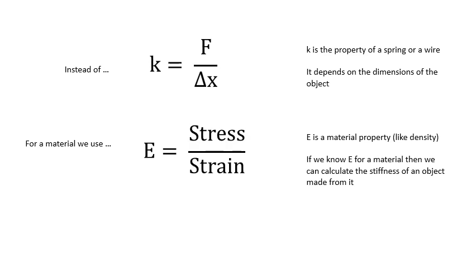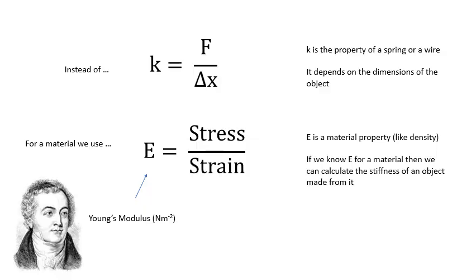If I know the value of E for steel, then I can work out the stiffness of a steel wire or cable or whatever. E is called the Young's modulus, named after a very clever man called Thomas Young. Because strain has no units, Young's modulus is measured in newtons per metre squared, or Pascal — the same units as stress. The Young's modulus of a material tells us the stiffness of a material. It's a material property, like melting point is a material property.